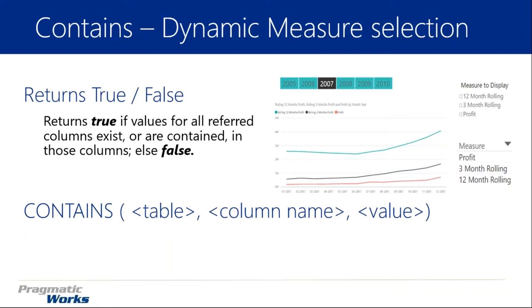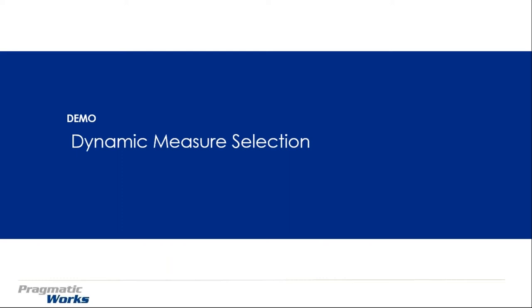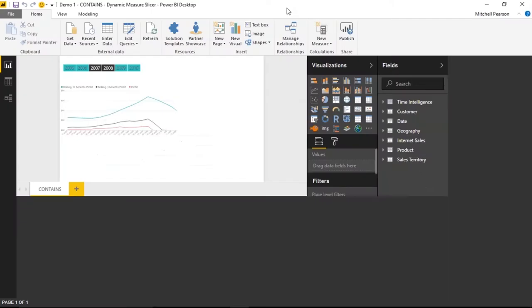Syntactically, the CONTAINS function takes a table or table expression as the first parameter, then the column you want to search within that table, and then the value you're searching for. In this example we'll search for 'profit' or 'three-month rolling' to see if it exists inside the table. It'll make more sense once we walk through the live demo in Power BI.